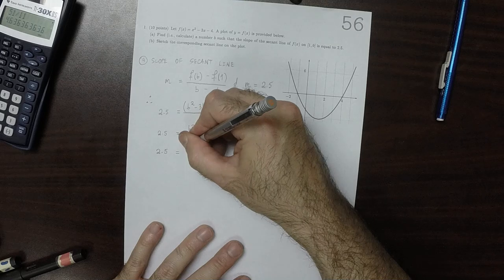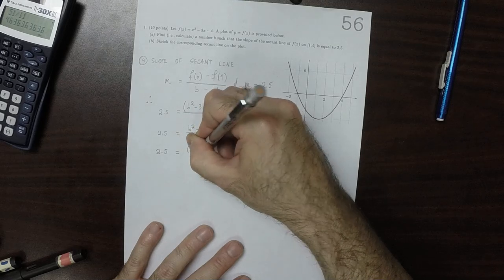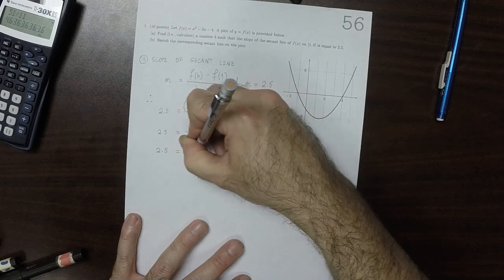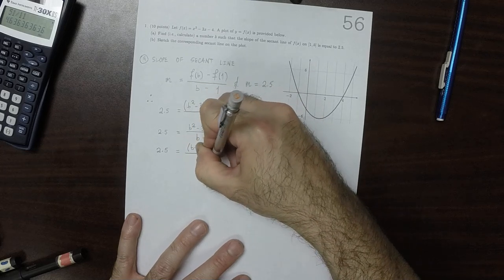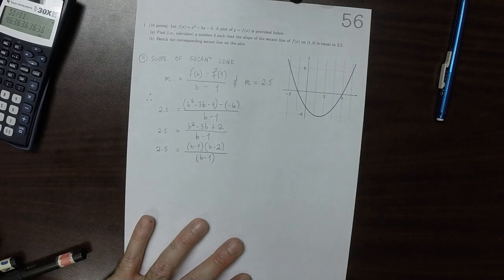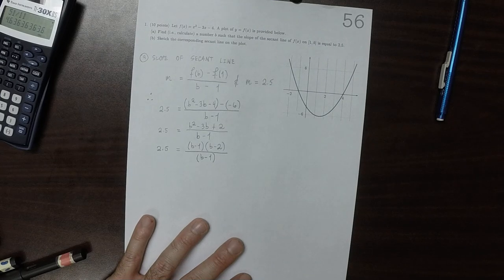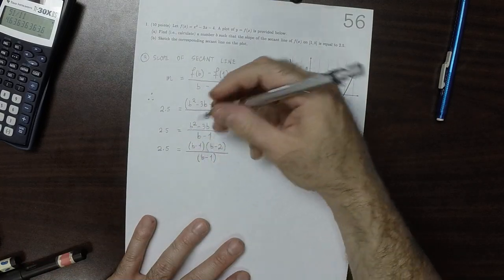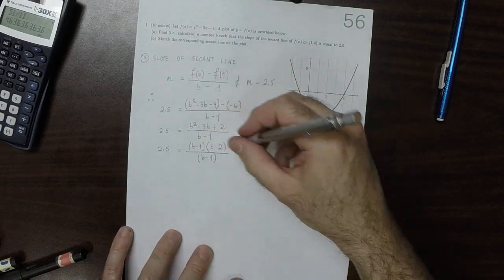So how about b minus 1 multiplied by b minus 2 and then this divided by b minus 1? Well, we can cancel these. It's possible to cancel.